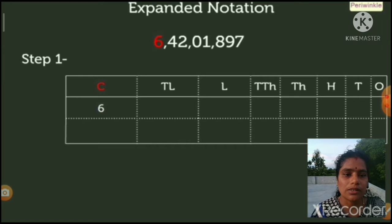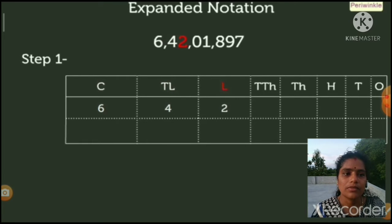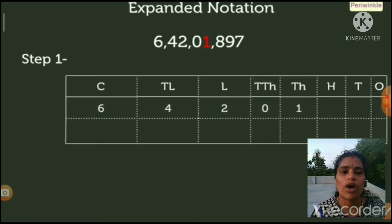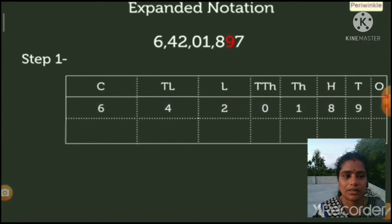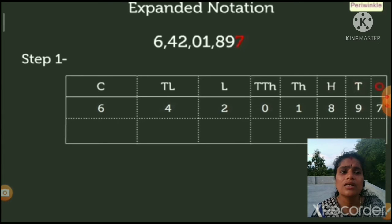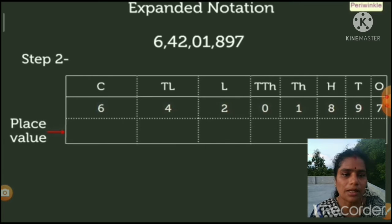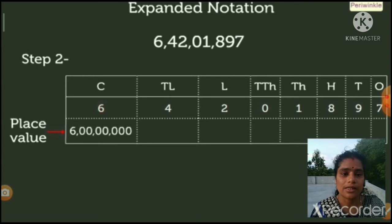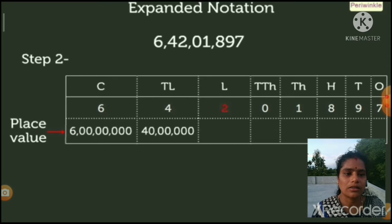Four is at the ten lakhs place, two is at the lakhs place, zero is at the ten thousands place, one is at the thousands place, eight is at the hundreds place, nine is at the tens place, and seven is at the ones place. Step two: find the place value of each digit. Six is at the crore's place, so the place value of six is six crore. Four is at the ten lakhs place, so the place value of four is forty lakh.